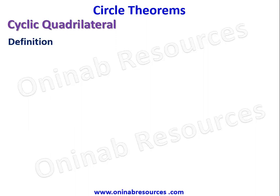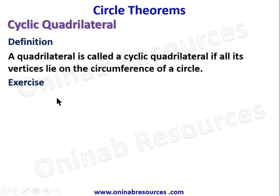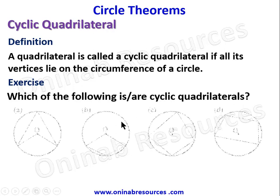A quadrilateral is called a cyclic quadrilateral if all its vertices lie on the circumference of a circle. Let's look at this: which of the following is or are cyclic quadrilaterals?